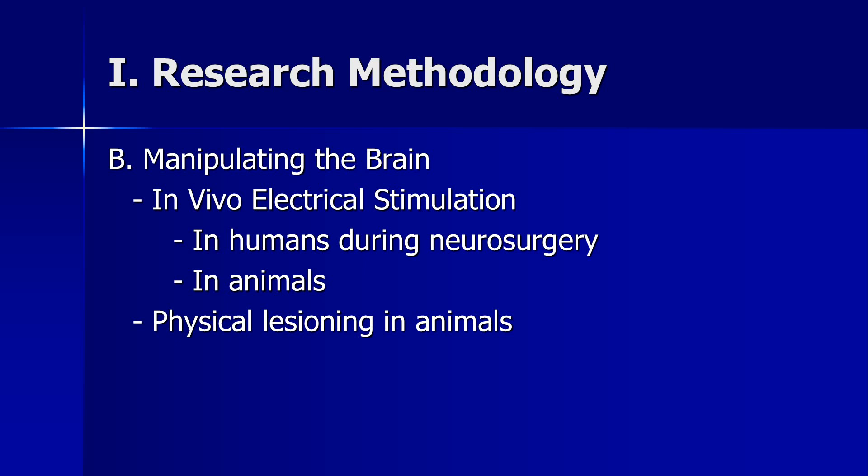In animals, physical lesioning is also possible — opening the skull, removing or ablating part of the brain with various procedures. In humans, specific neurosurgeries like epilepsy surgery allow us to see what removing a specific part of the brain does. We'll take a close look at this when we examine patient HM and talk about memory. At GW, they do a very small removal of part of the temporal lobes, and it provides some pretty interesting case studies.